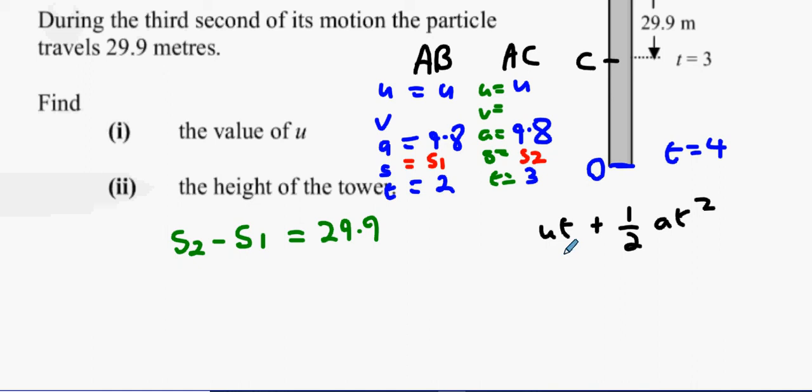So what we should get is 2u plus 4.9 times 4, so we get 2u plus 19.6. That's for s1.